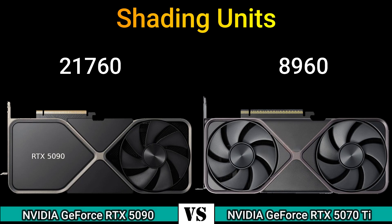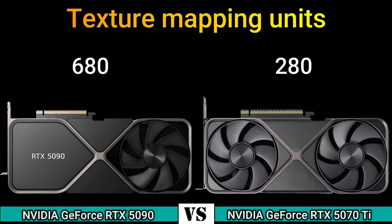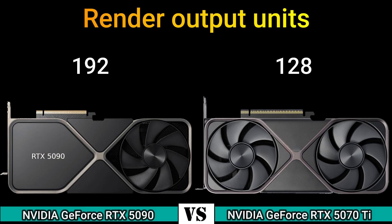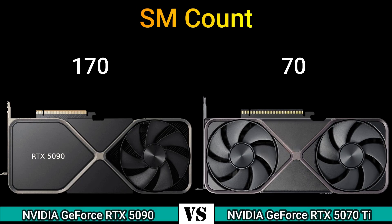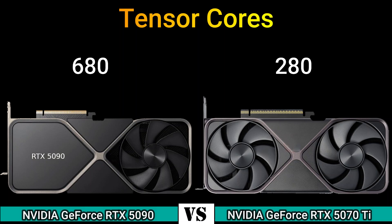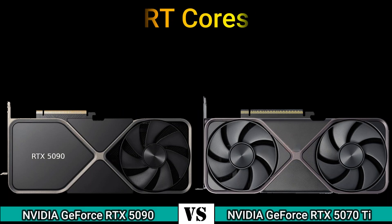Shading units: 21,760 and 8,960. Texture mapping units: 680 and 280. Render output units: 192 and 128. SM count: 170 and 70. Tensor cores: 680 and 280.